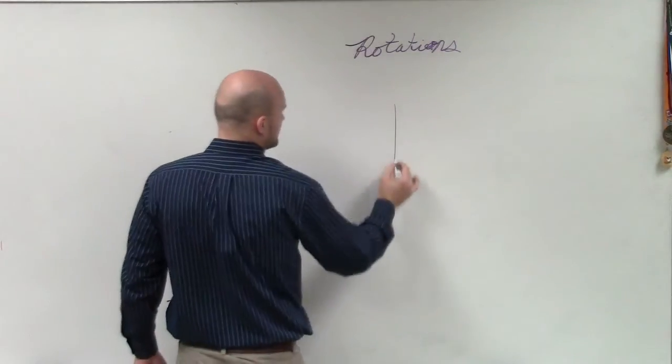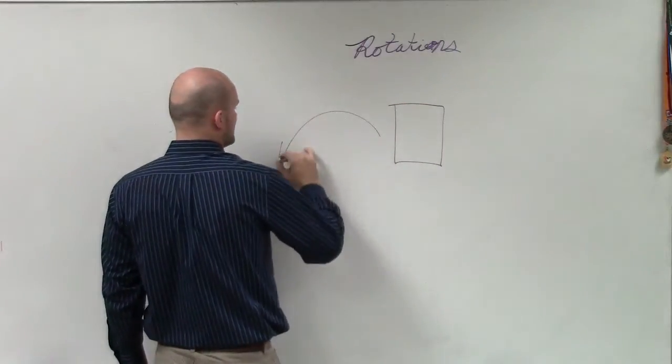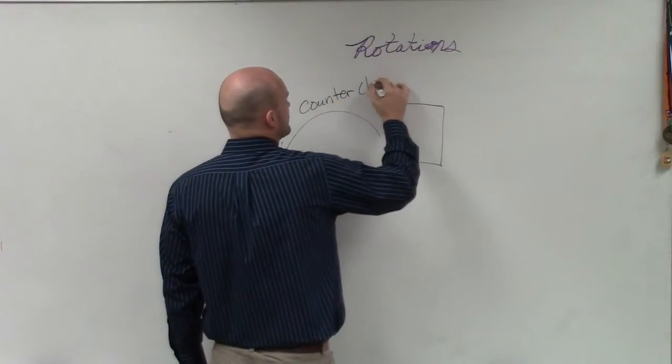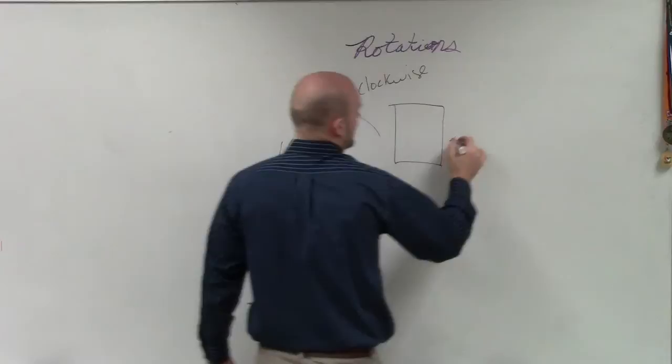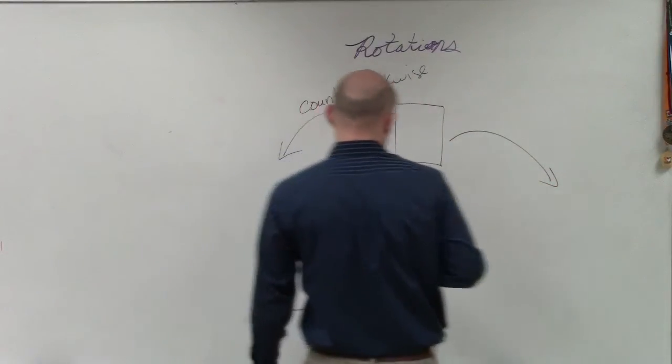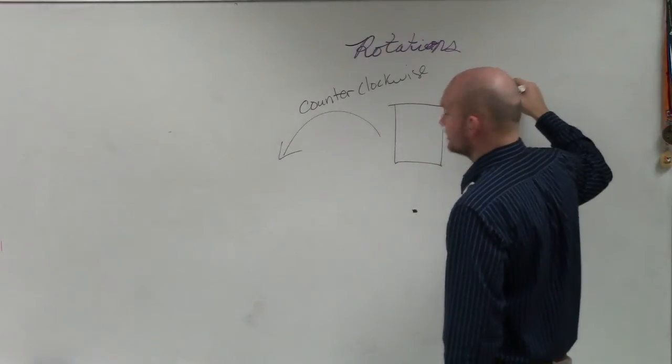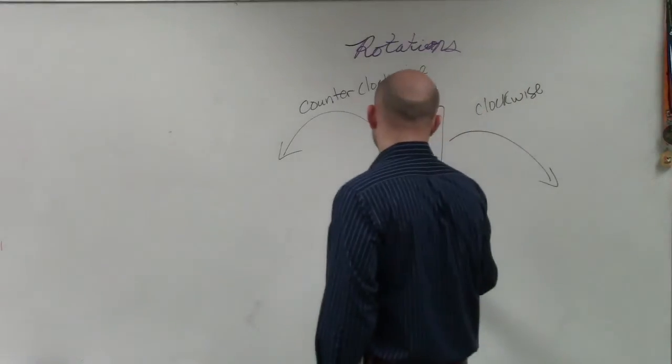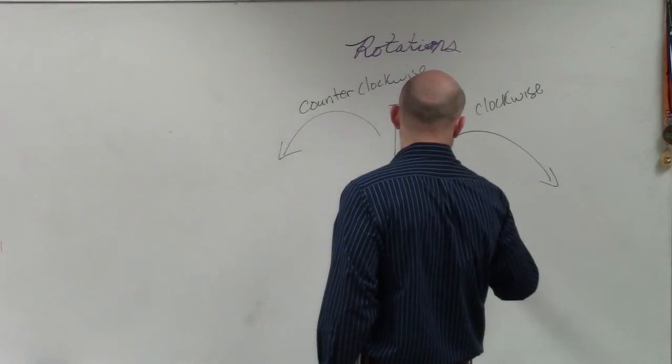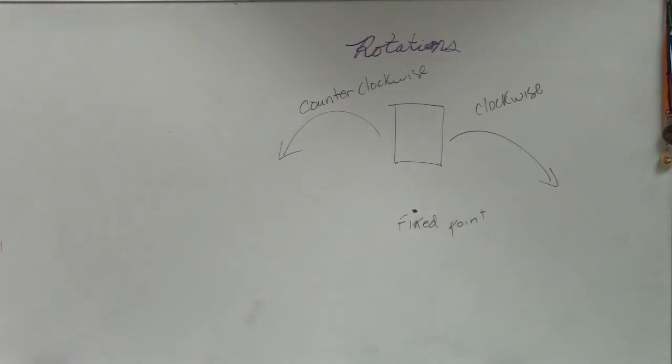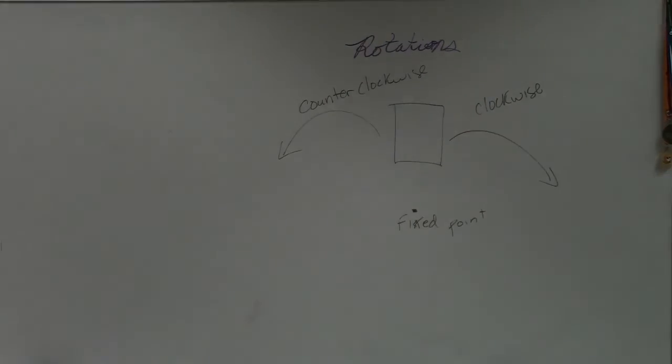So first thing I want to tell you guys is if we have a figure, and we rotate that figure in the left direction, we call that counterclockwise. And if we rotate it in the clockwise direction, we call that clockwise. I'll talk about the fixed point here in just a second. So that's counterclockwise and clockwise, all right? Now.